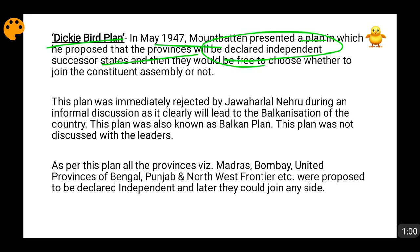At that point of time, it was being said that India and Pakistan would be formed. Mountbatten suggested that all the provinces should be declared independent, and after that they will be free to join either India or Pakistan. And if they didn't want to join any of them, they could remain free.